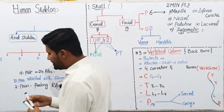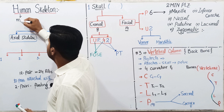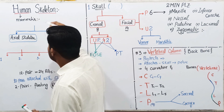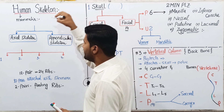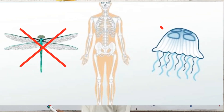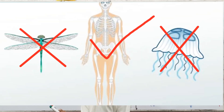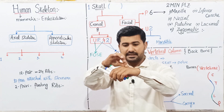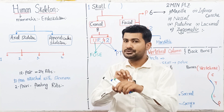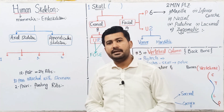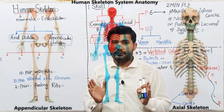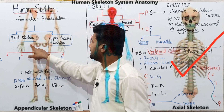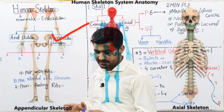Humans belong to class Mammalia, and such organisms have an endoskeleton — the skeleton present underneath the skin. The human skeleton is made up of two main parts: one is the axial skeleton and the other is the appendicular skeleton.